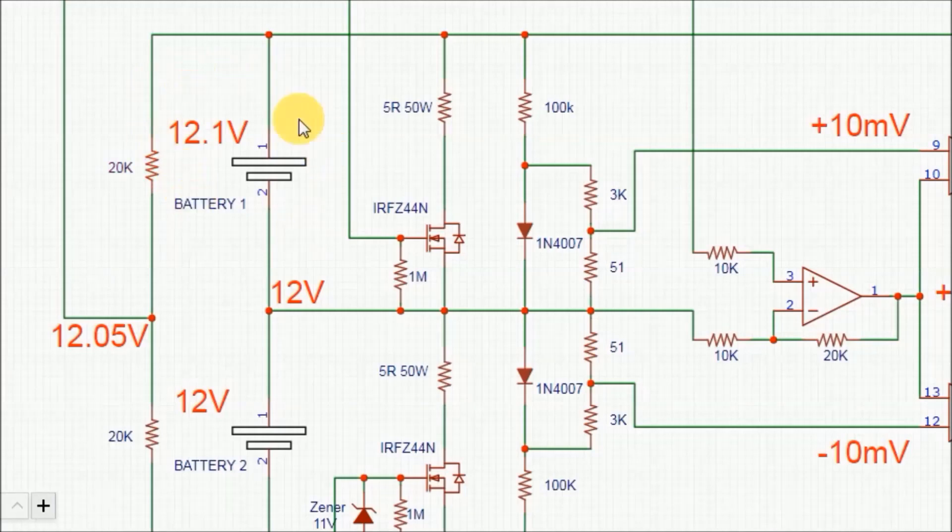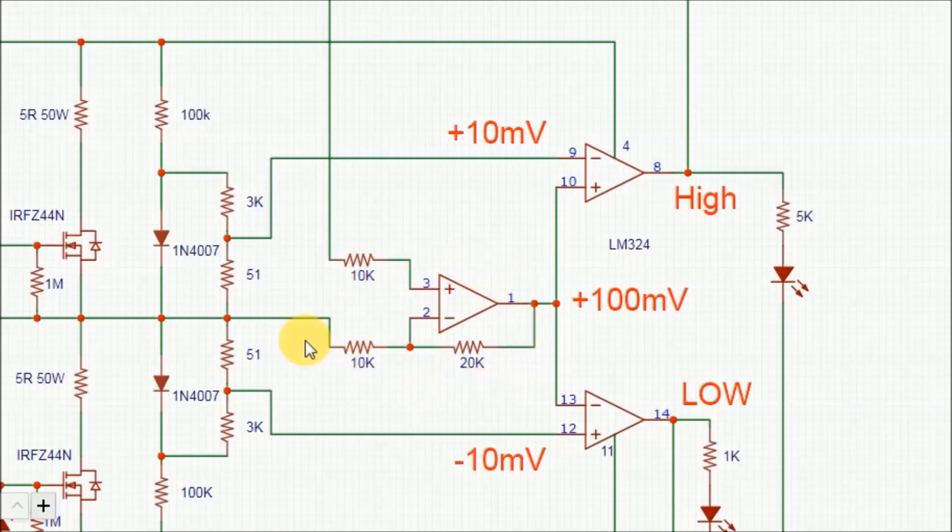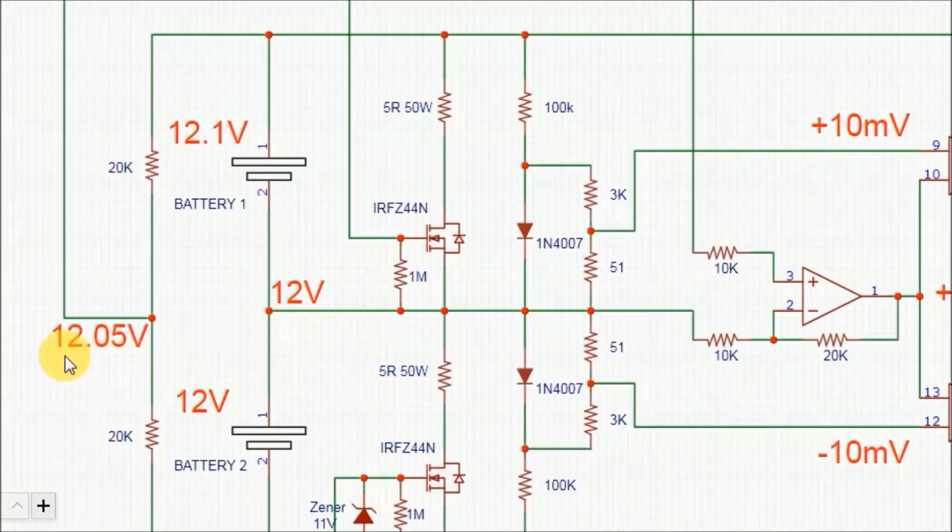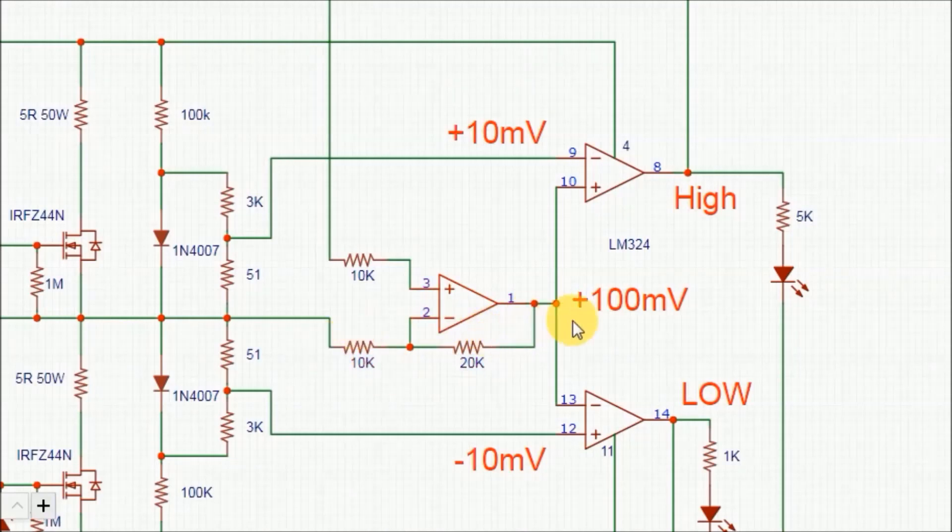But if the voltage of the first battery was higher than the other, let's say 12.1 volts and the other 12 volts, in that case the voltage at this point will be 12 volts and the voltage at this point will be 12.05 volts. So the differential amplifier calculates the voltage difference between these two points and multiplies it by 2. The output voltage here will be 100 millivolts.